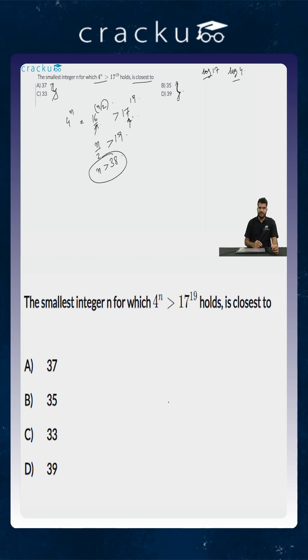So now if you look at the options, the options you have are 33, 37, 35, and 39.